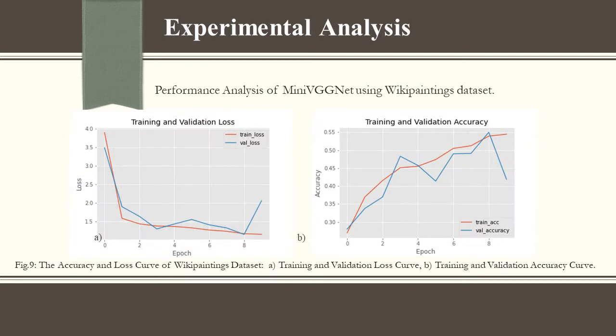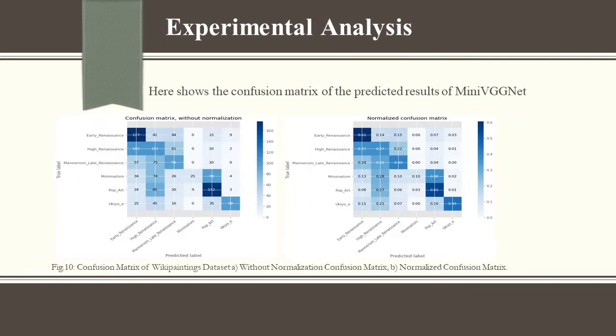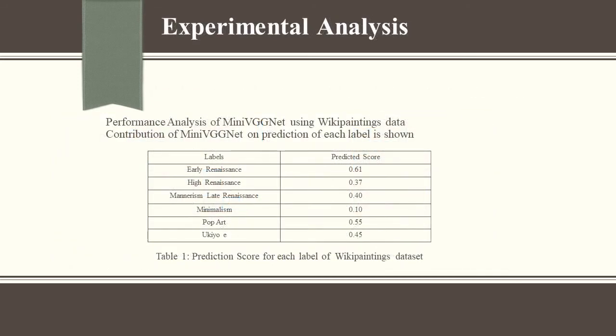Experimental Analysis: Figure 9 shows the accuracy and loss curves of the WikiPaintings dataset, including the training and validation loss curve and the training and validation accuracy curve. Figure 10 shows the confusion matrix of the predicted results of MiniVGNet — both without normalization and with normalization. Table 1 shows the prediction score for each class of the WikiPaintings dataset, which is the performance analysis of MiniVGNet.